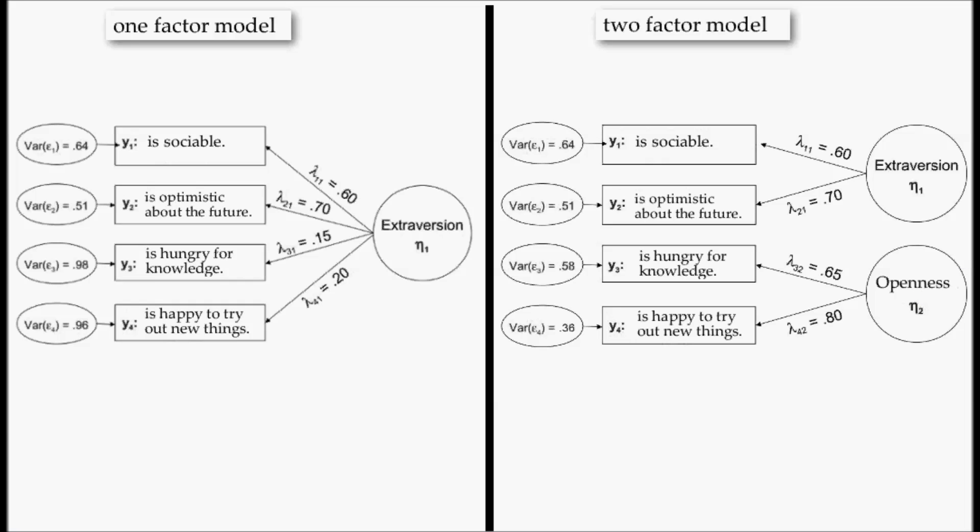Which in this case, as you can see, is the better solution. Because in the one-factor model, we see that the two items is hungry for knowledge and is happy to try out new things load only small on the factor extraversion. The error variance is gigantic. So only a small amount of variance can be explained by the factor extraversion. Whereas in the two-factor model, in which we introduce a new factor, in this case we call it openness, the two items is hungry for knowledge and is happy to try out new things load on openness much better than they were loading on extraversion in the one-factor model. And therefore, as you can see, the error variance is much smaller.